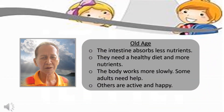In some references in science, old age is considered the last stage in the life cycle of humans. At this stage, the intestine absorbs less nutrients, so they need a healthy diet and more nutrients. The body works more slowly, and some adults need help, while others remain active and happy.